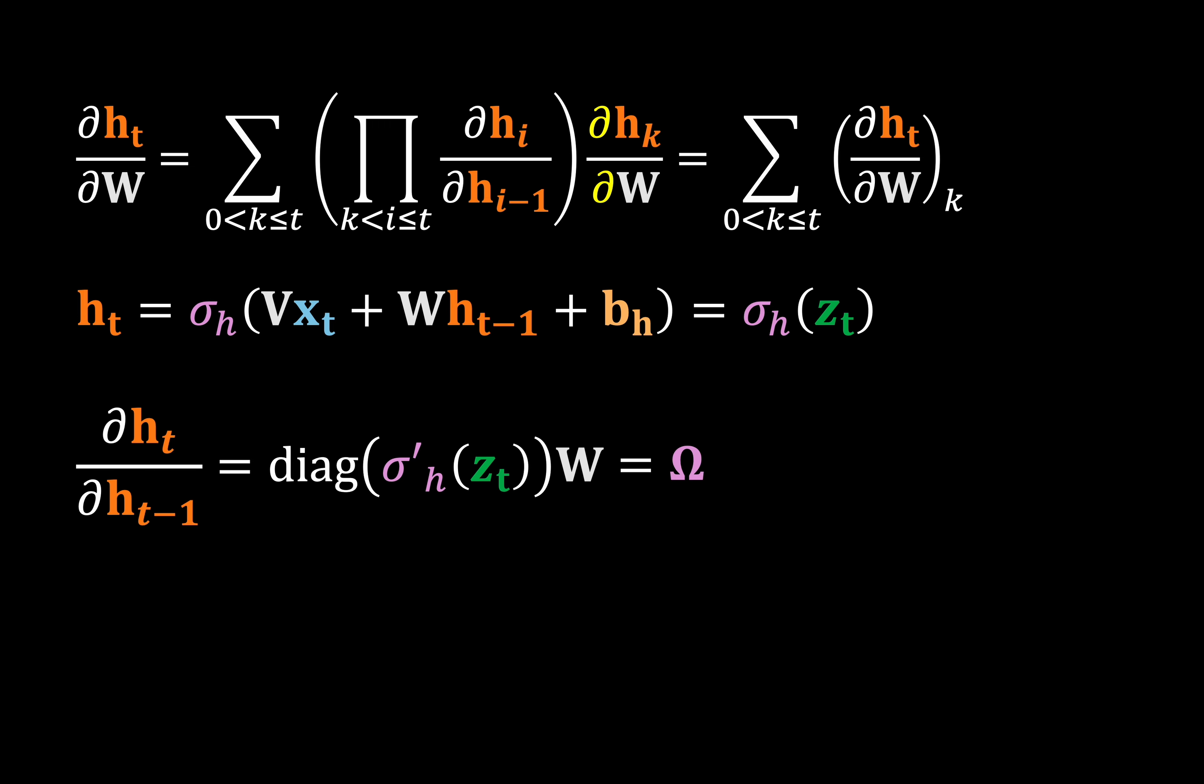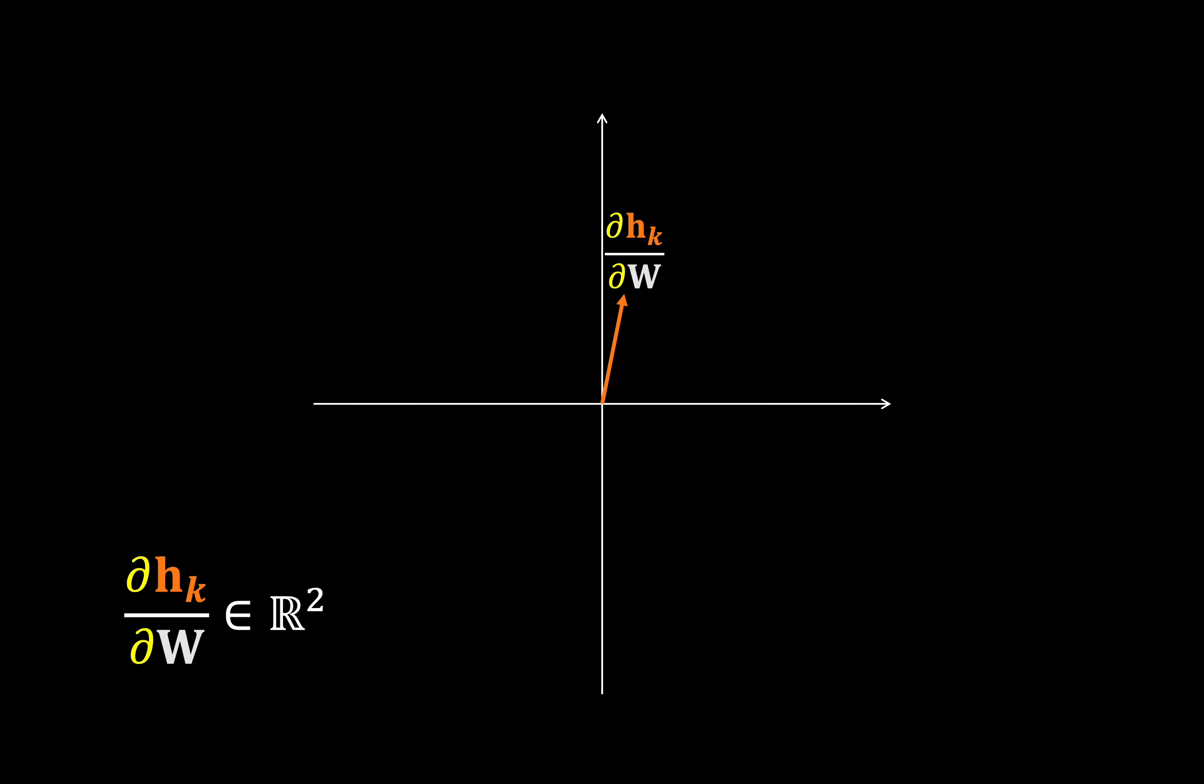Now we've basically got some time-independent expression for our derivative, which we'll just call omega. And we can see that the gradient contribution from time step k is just the repeated multiplication of this term t minus k times. So basically our contribution is equal to the immediate derivative at time step k multiplied by omega to the power of t minus k.